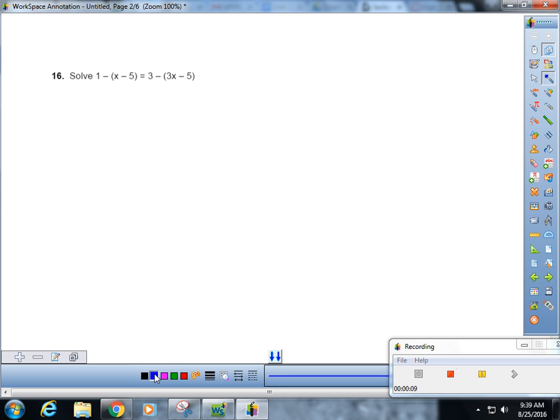The mistakes that are made in number 16 tend to just be distributing these negative signs wrong. So you got 1. Think about this as like a minus 1 times x. So negative x. A negative 1 times a negative 5 is a positive 5. 3, again, think about like that, like a minus 1 out in front of there.